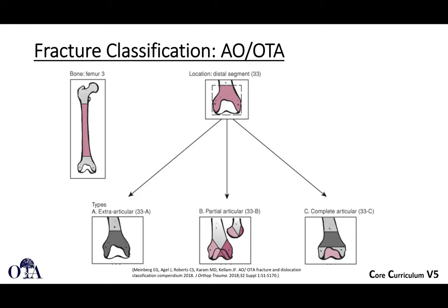In the AO/OTA classification, the distal femur is bone 3, distal segment 33. Extraarticular supracondylar fractures are 33A — these can be simple or comminuted. Partial articular fractures are 33B: a lateral condyle is B1, medial is B2, and a Hoffa fracture is B3. Complete articular fractures, 33C, mean all articular fragments are dissociated from the shaft.